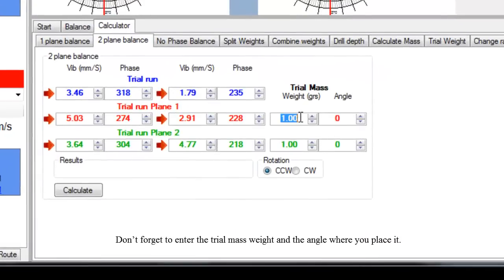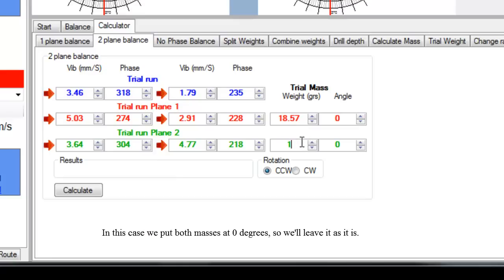Don't forget to enter the trial mass weight and the angle where you place it. In this case we put both masses at 0 degrees, so we'll leave it as it is.